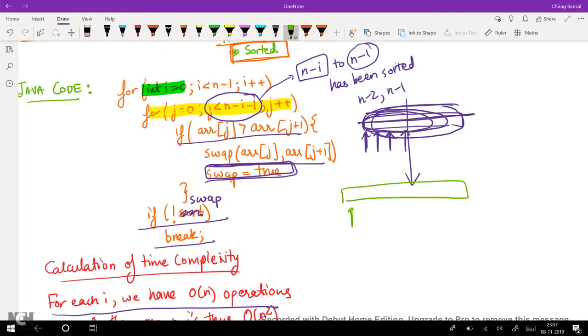This is the array. For each i we iterate over the array till n-i-1, which is order n. And as we have n i's, so we have O(n) times O(n), which is O(n²). Therefore its time complexity is O(n²) in average case.